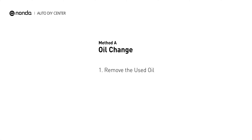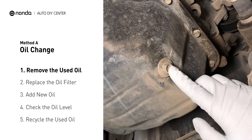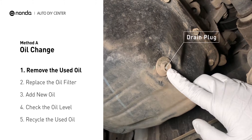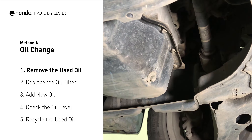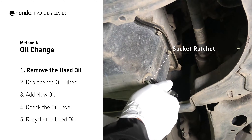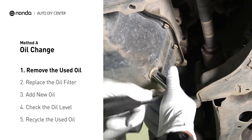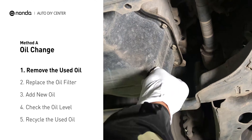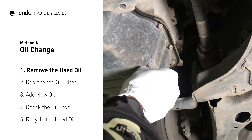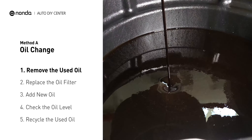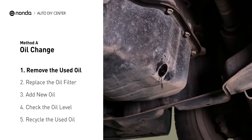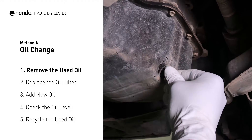Method A: Oil Change. Locate the oil drain plug on your vehicle and place an oil collection pan underneath it. Use a socket ratchet to remove the plug from the oil pan on your vehicle. Once the plug is removed, the oil should start flowing out into your collection pan. Once all the oil is drained, replace the drain plug and tighten it back on.